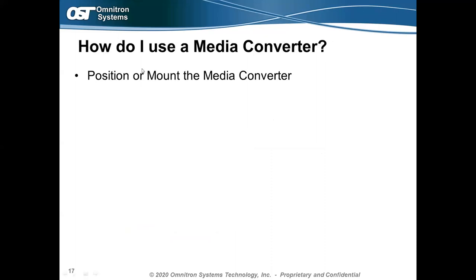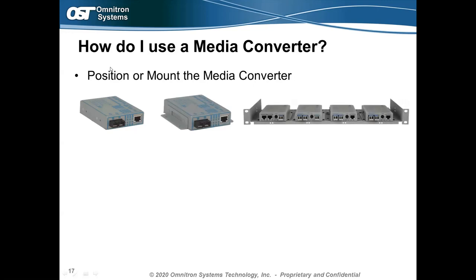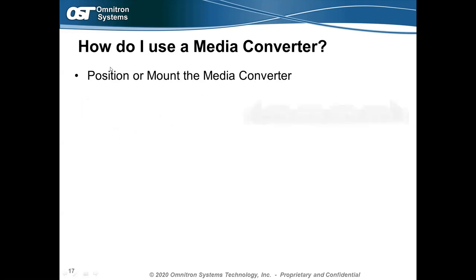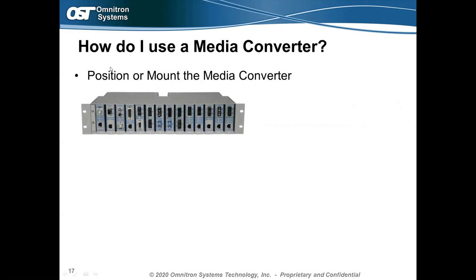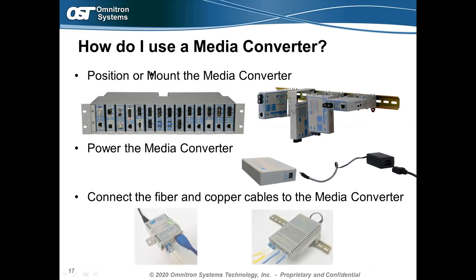How do you use a media converter? First, position or mount it — whether tabletop, wall mount, rack mount, in a rack-mount chassis, or DIN rail mounted for industrial applications. Then run power to it, connect the copper and fiber cables, and most media converters will have LED lights to confirm the link has been achieved and is good.